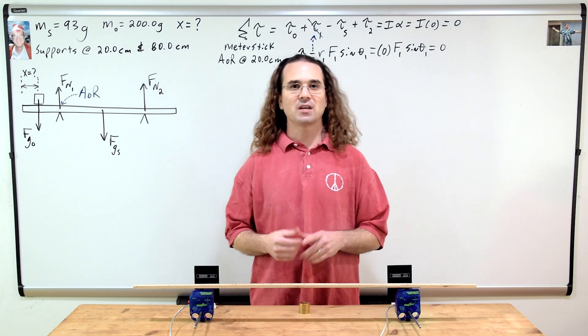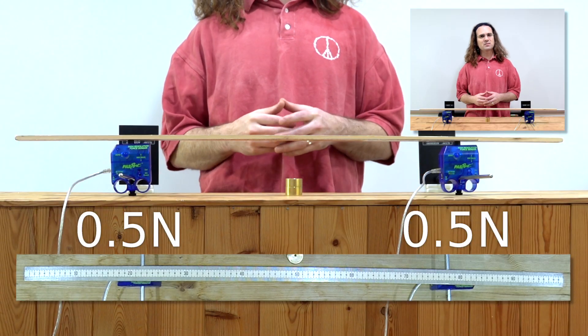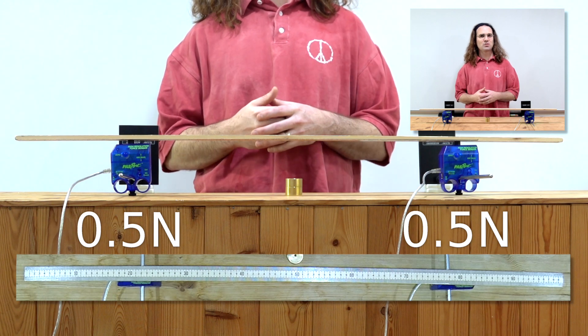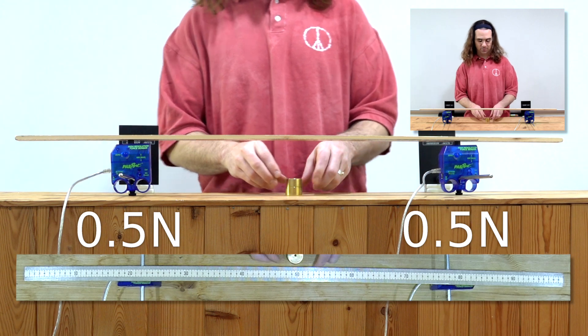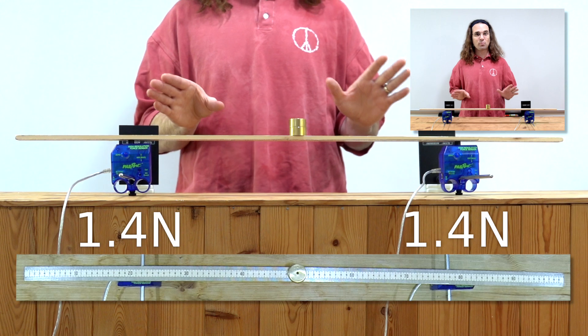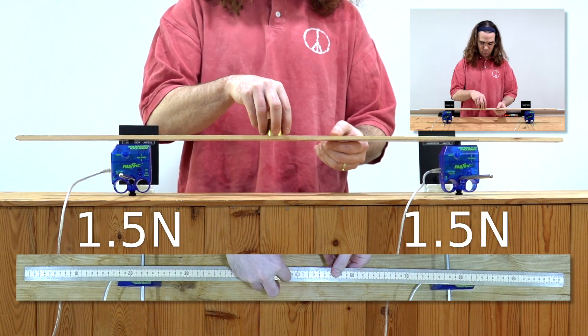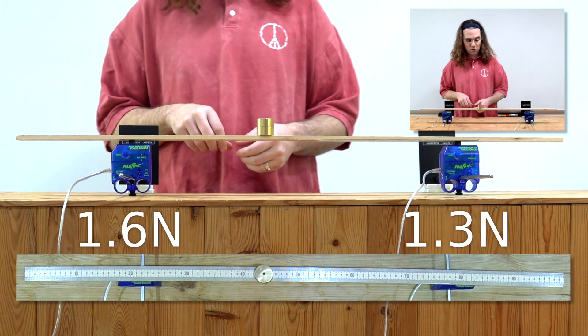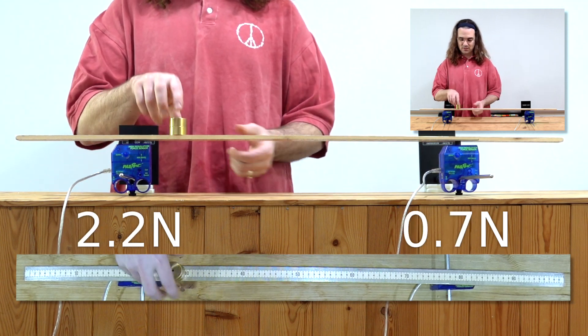Yeah, so let's talk about the normal forces. I have replaced the two dominoes with two force sensors. This is so we can measure and understand what happens to the normal forces as the painter moves closer to the end of the scaffold. Notice when the painter is directly in the middle of the scaffold, the magnitude of both normal forces is the same. And as the painter moves toward the left end, the normal force on the left increases and the normal force on the right decreases.